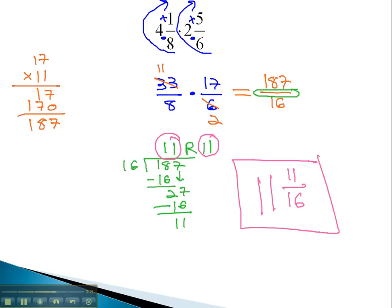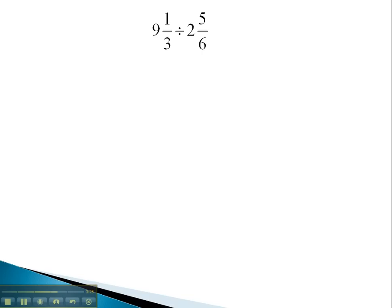Let's try a division problem. This division problem, 9 and 1 third divided by 2 and 5 sixths, is gonna work very similar to how we work the multiplication problem. Change it to a fraction by multiplying 3 times 9 is 27, plus 1 is 28 thirds. Divided by 2 times 6 is 12, plus 5 is 17 sixth.